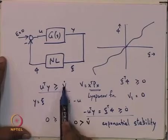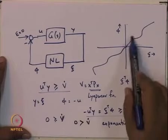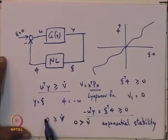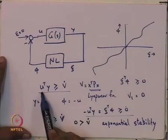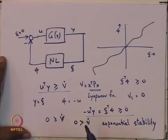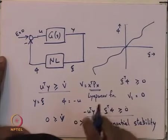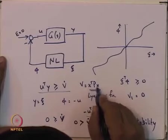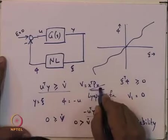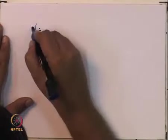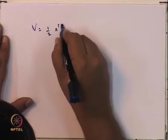That means, if you take U transpose Y ≥ V-dot and you already know that psi transpose phi ≥ 0 for the nonlinearity, when you sum both, you get 0 ≥ V-dot. So all you have to show is that U transpose Y ≥ V-dot. One small adjustment: instead of taking V as X transpose PX, I should be taking V as half X transpose PX. So V = (1/2) X transpose PX.